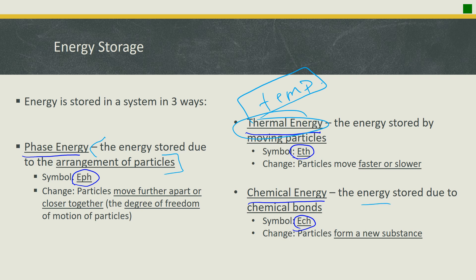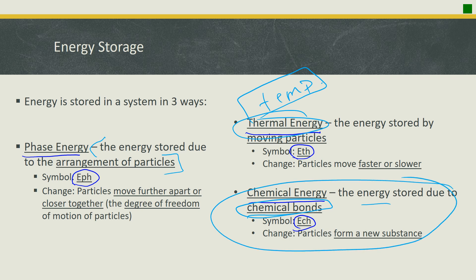Chemical energy is the energy stored due to chemical bonds; you change it by breaking or making bonds within or between particles. Because in this unit we are only dealing with phase changes — we start with water and end with water — chemical energy will always remain the same. We are not breaking or making bonds within individual particles; we are only breaking attractions between particles. So in this chapter, we won't really be dealing with chemical energy changes.